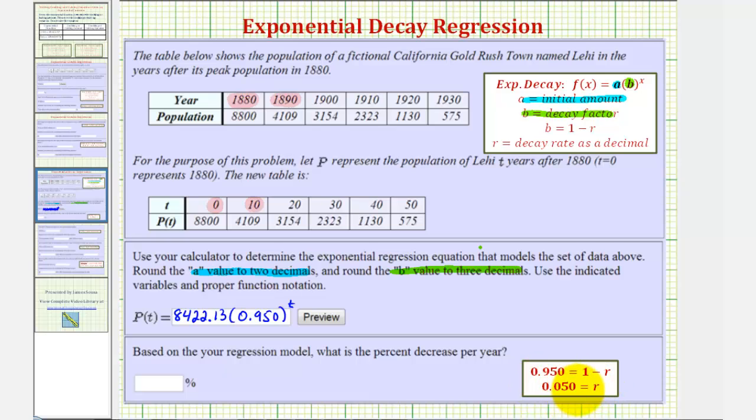This is the decimal value of the percent decrease. To convert this to a percentage, we multiply by 100 and add a percent sign, or move the decimal point to the right two places, giving us 5.0 percent, or just 5 percent.